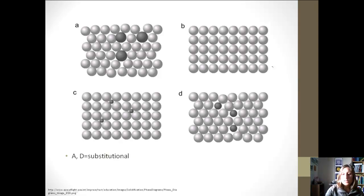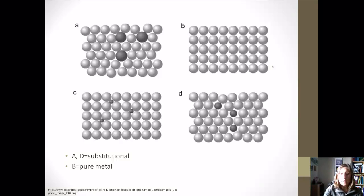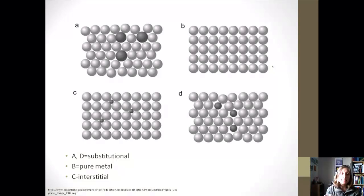So hopefully you have paused the video and figured these out on your own. A and D are both substitutional alloys. The other metal is replacing some of that initial metal. B is a pure metal. It's only one type of metal, no alloy actually, and C is an interstitial alloy, so those small ones are replacing in the spaces. So go ahead and get started on the homework. Hope you have a good day.